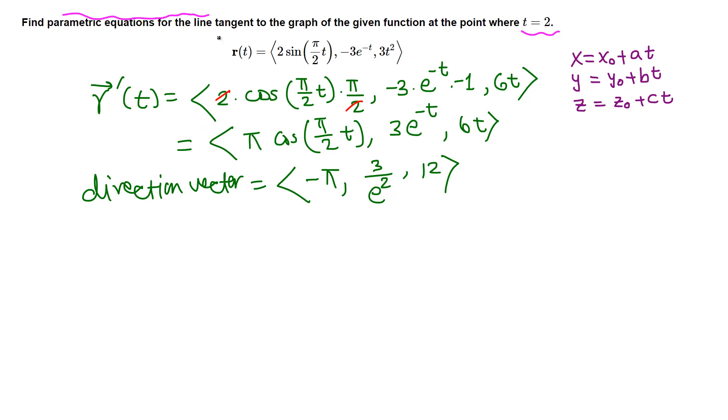To find the tangent line, since this is a vector equation, plug in t = 2 to get point (x, y, z). Just plug in 2: π/2 times 2, sine π. Sine π is 0, so the first is 0. -3e^(-2), so -3/e². And 3 times 2² is 12.